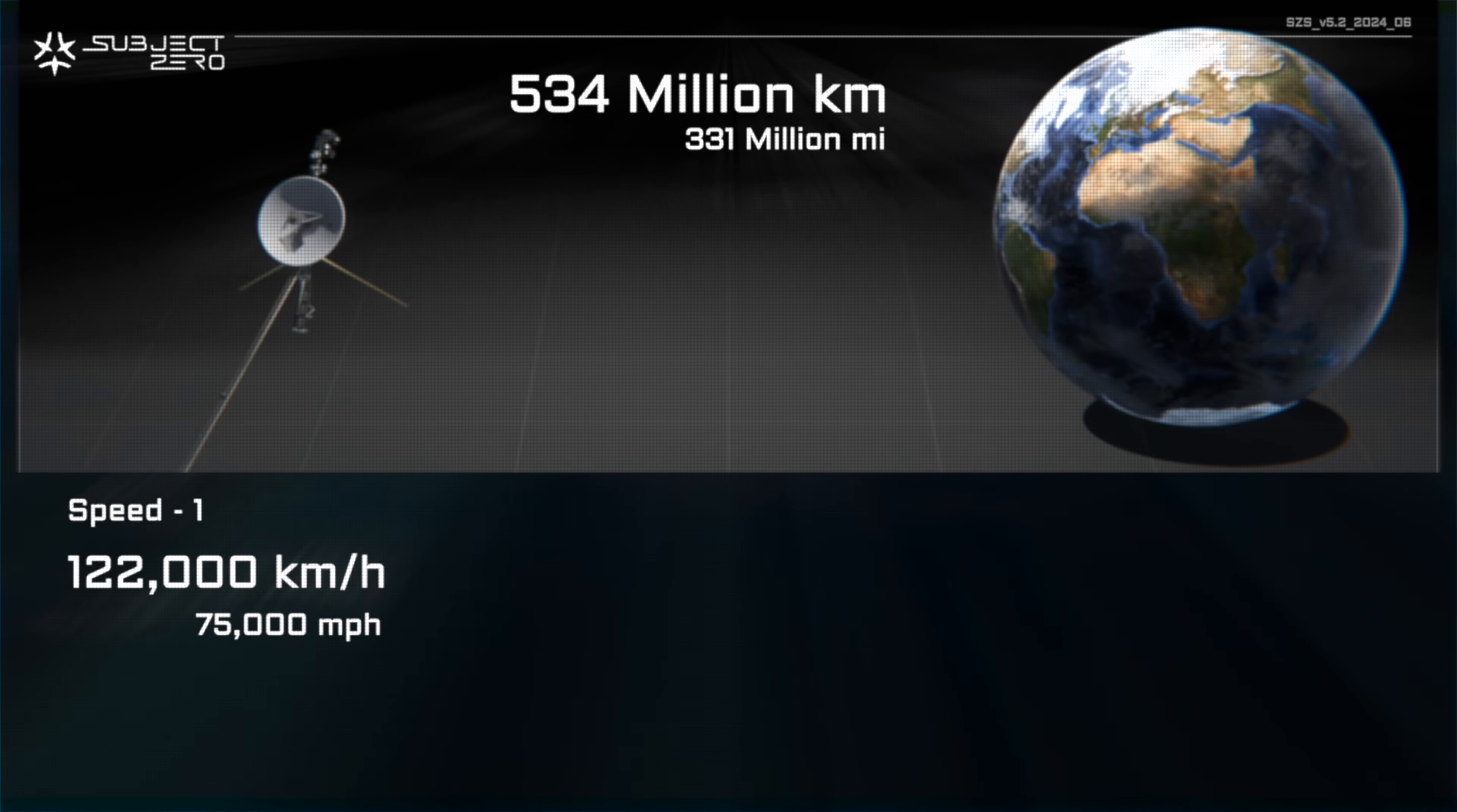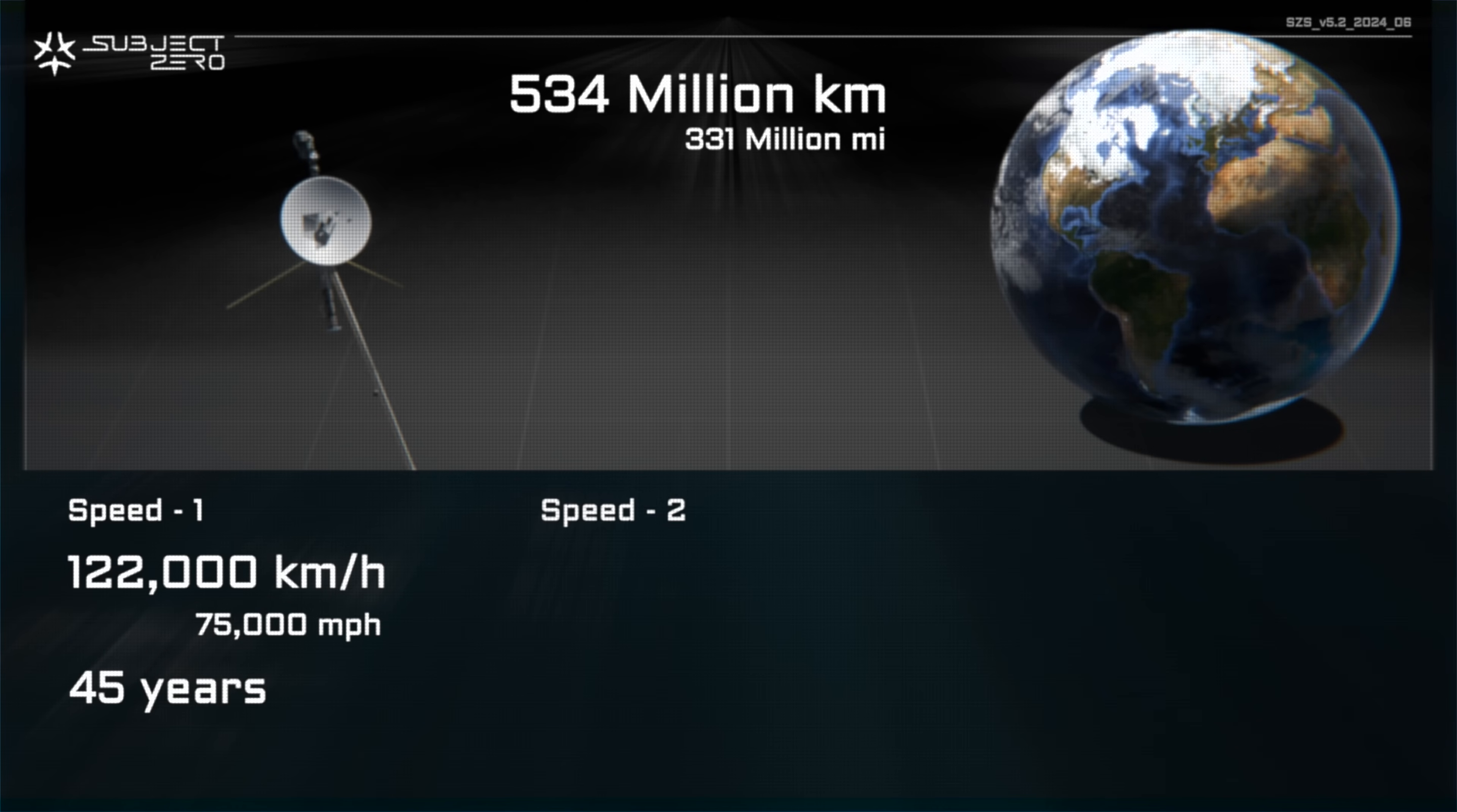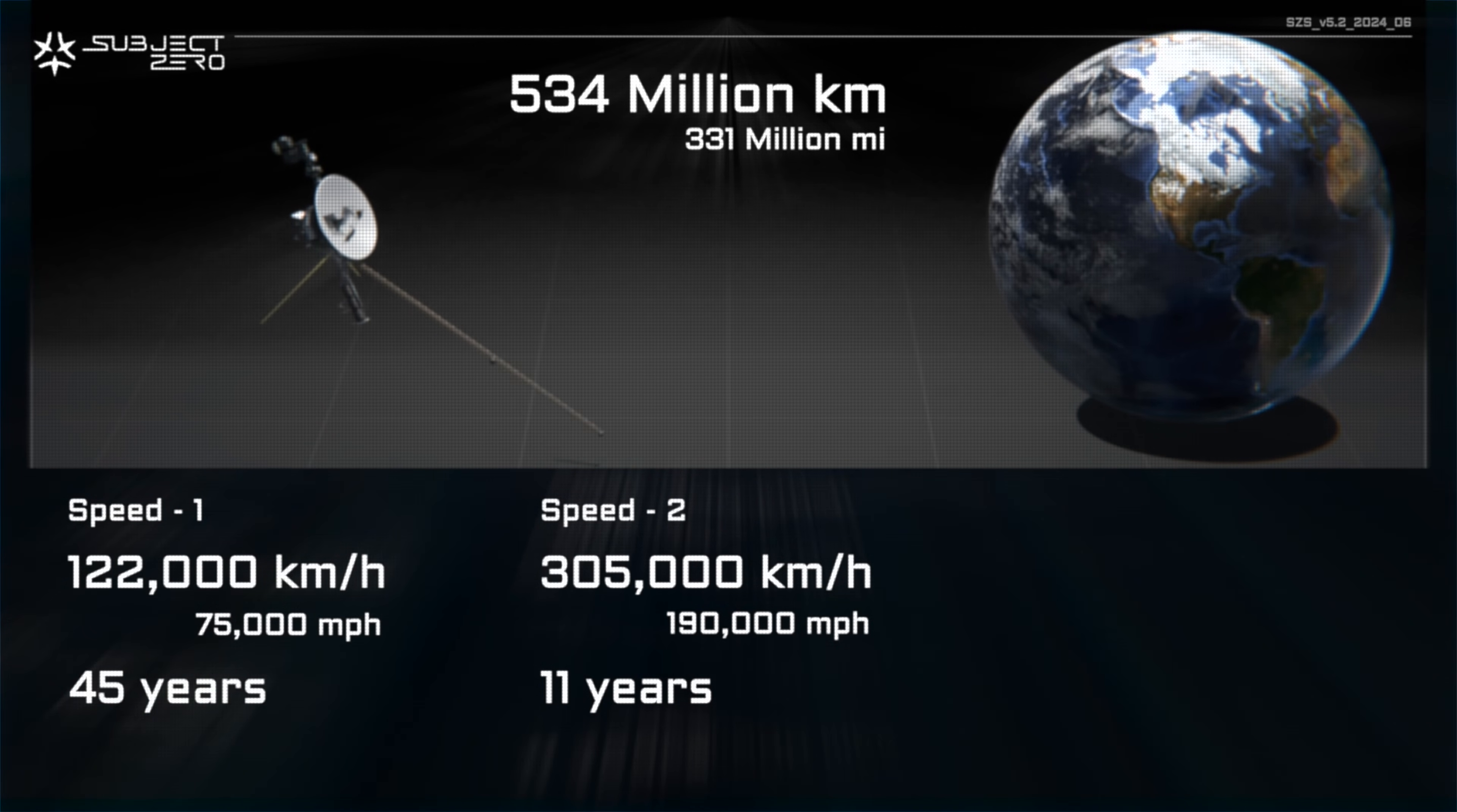Traveling at twice the speed of Voyager 1, 122,000 kilometers an hour, it will take 45 years to reach the probe. As we increase the speed, we see that things become more reasonable at around 5 times Voyager 1's speed, taking only 11 years to reach the probe.